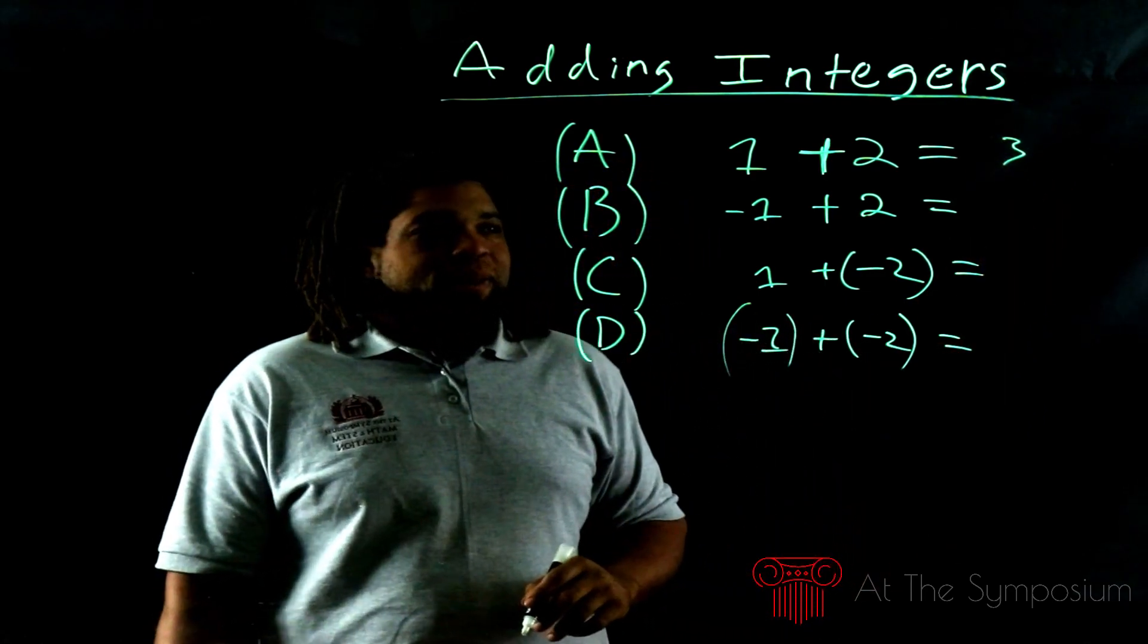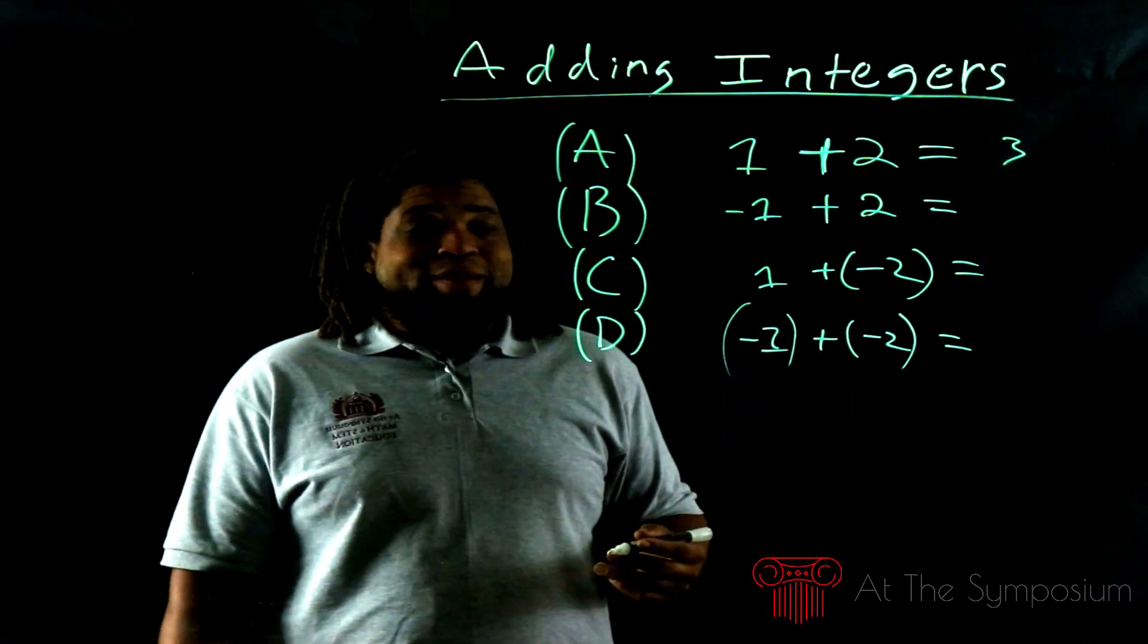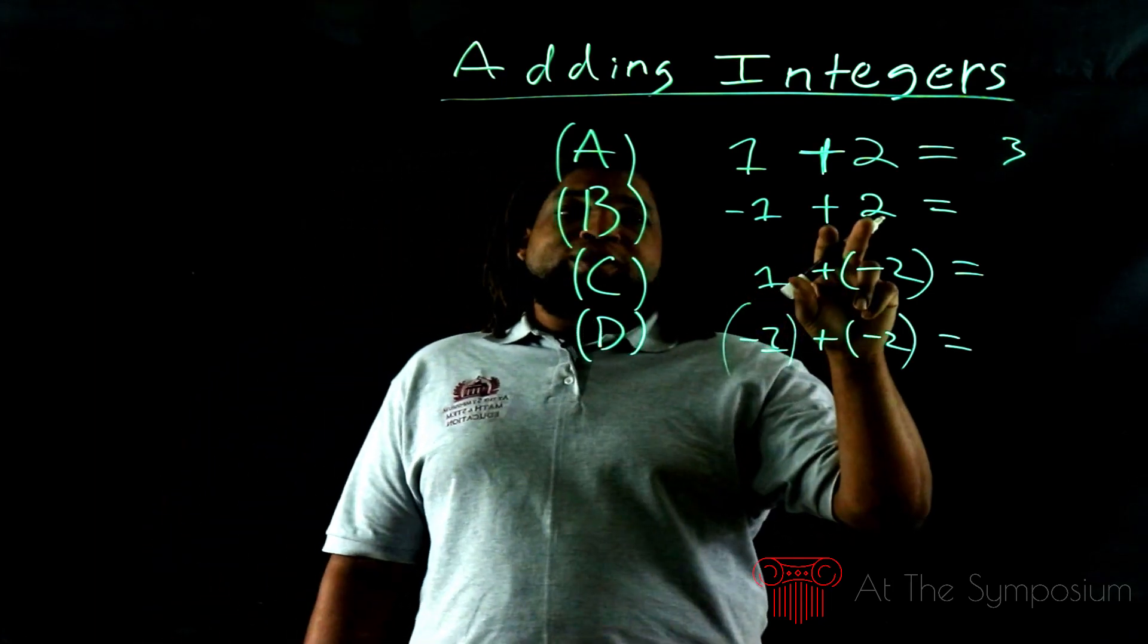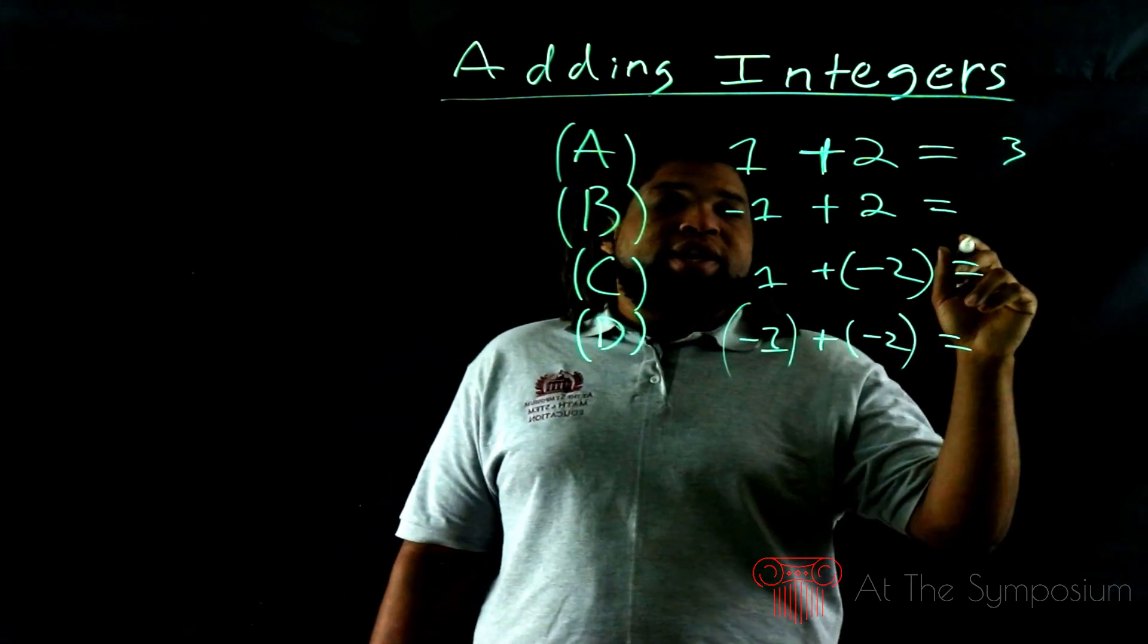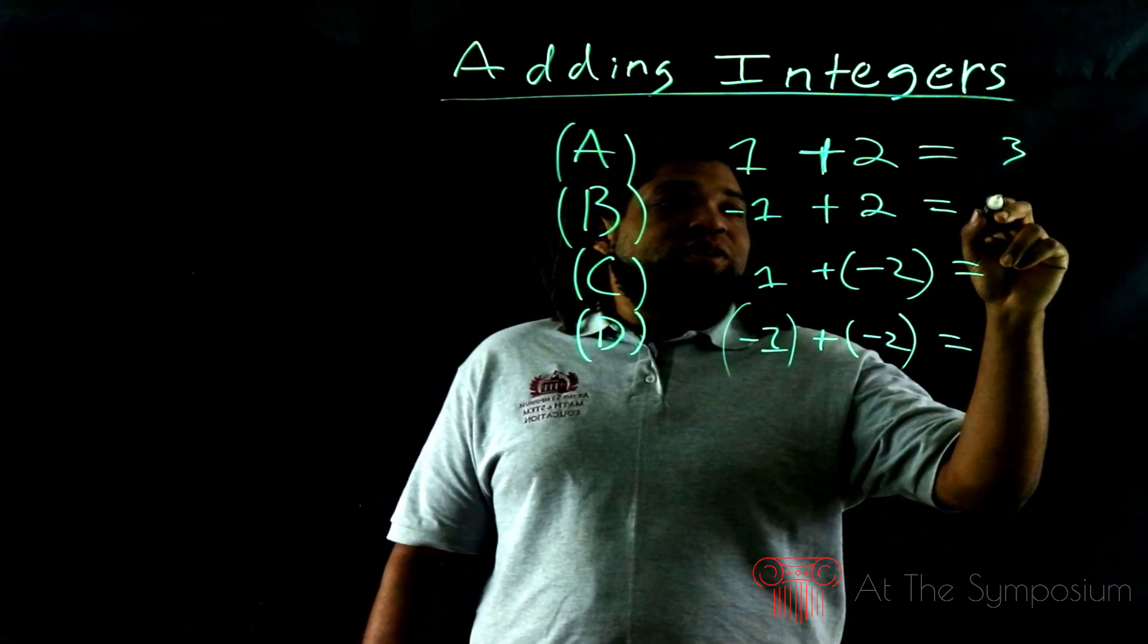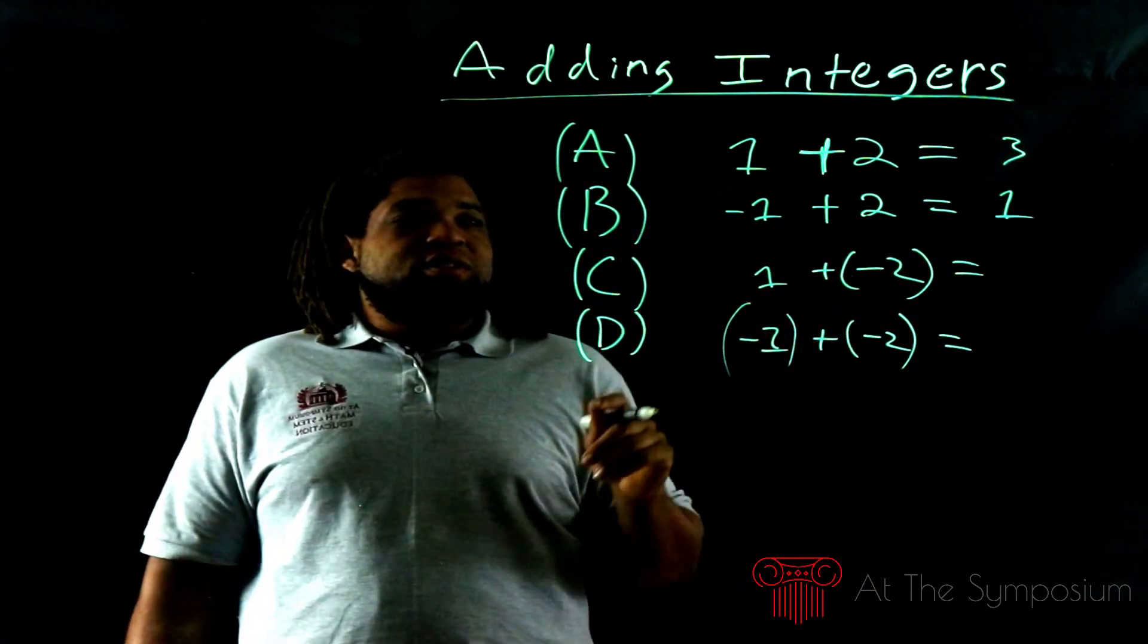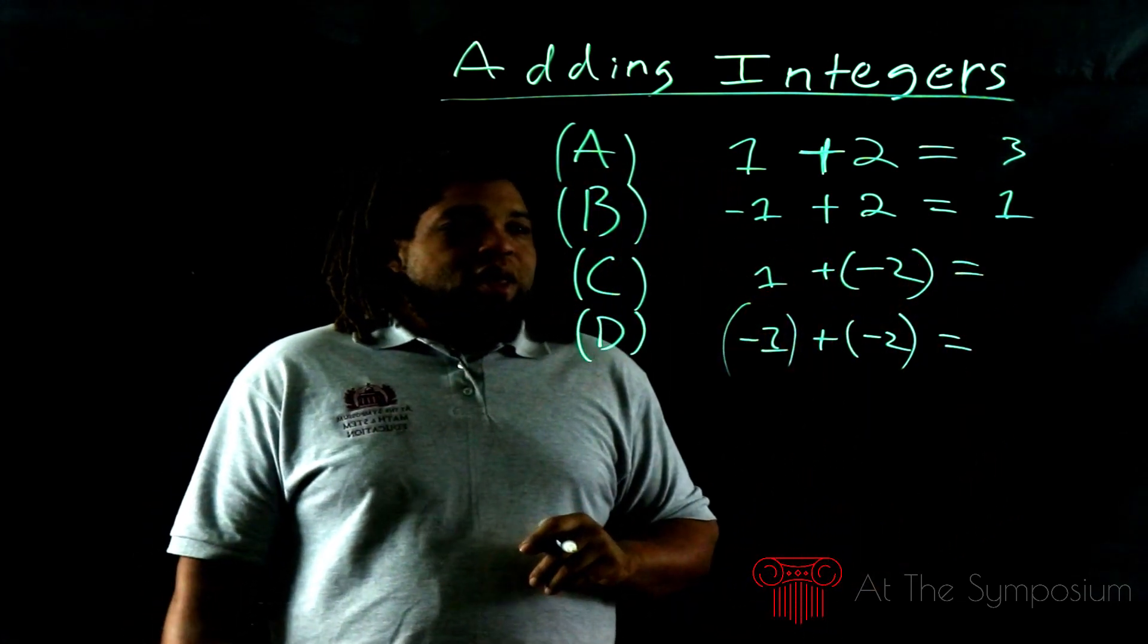Now we have -1 + 2. What do we do when we add by a negative number? Well, we subtract and we keep the sign of the larger number. The larger number in this case is 2. So if we subtract 1 and 2, we get 1, and it's going to stay a positive 1 because 2 is the larger number.